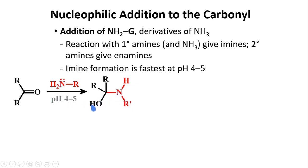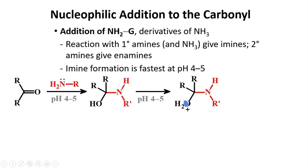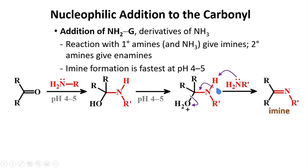At pH 4.5, this can be protonated and protonated further to give the OH2 functionality. Further interaction with a base such as the amine itself can remove this proton. The electrons present between nitrogen and hydrogen will form a double bond, and this will cleave the bond to oxygen, removing water as your leaving group. And eventually, you will get your imine.